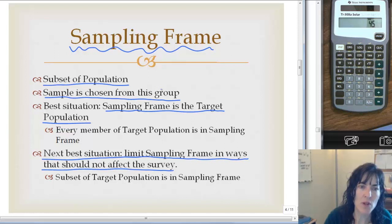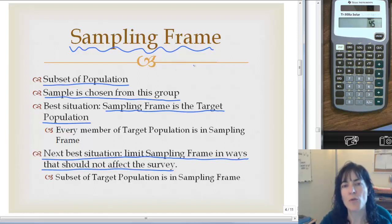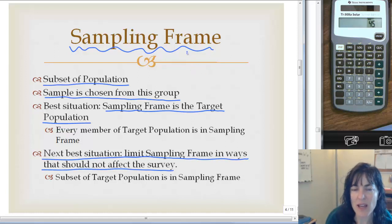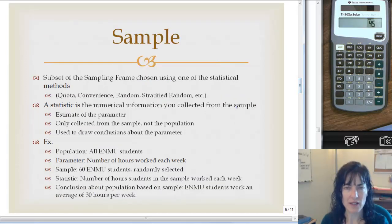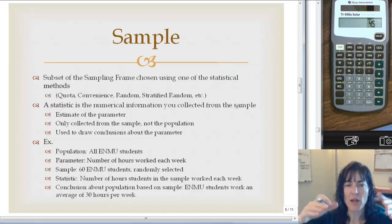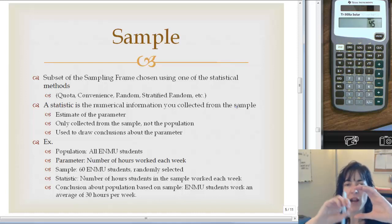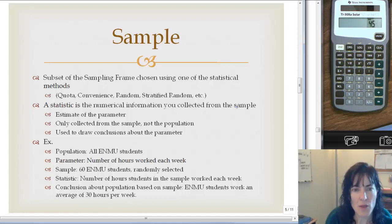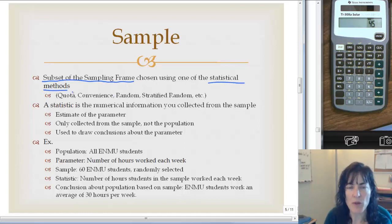Once I've identified my target population and sampling frame, I actually choose a sample — a subset of my sampling frame — using one of these statistical methods. The ones we've focused on are quota, convenience, random, and stratified random sampling.